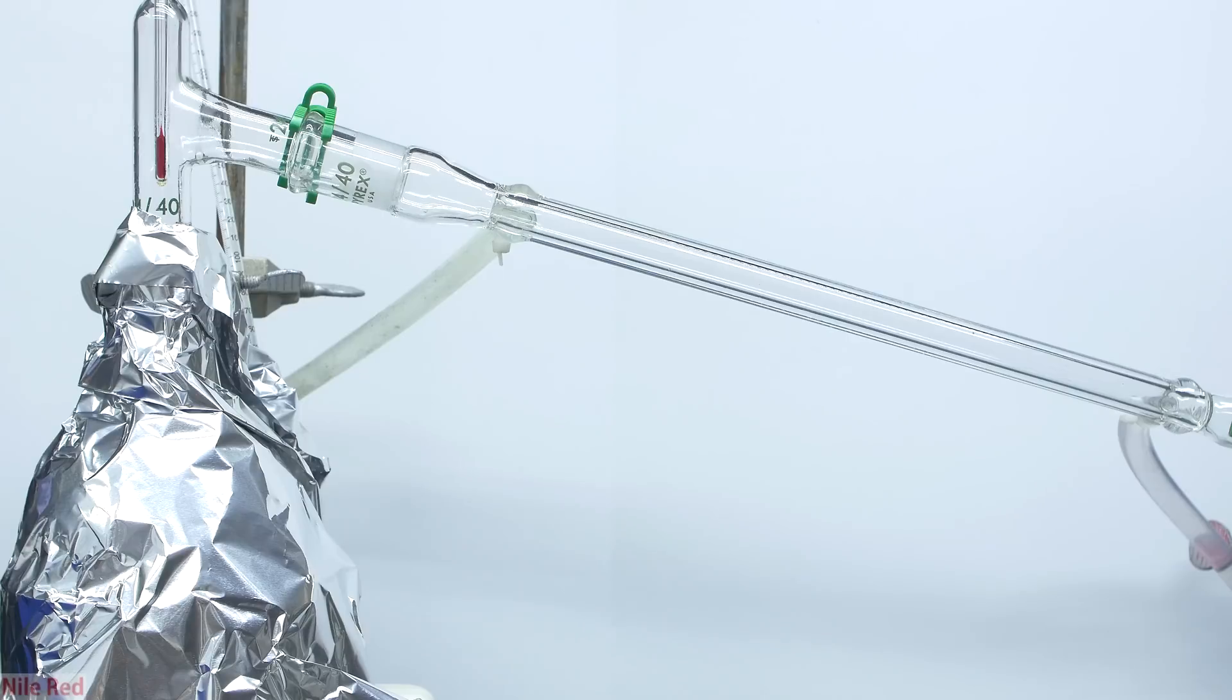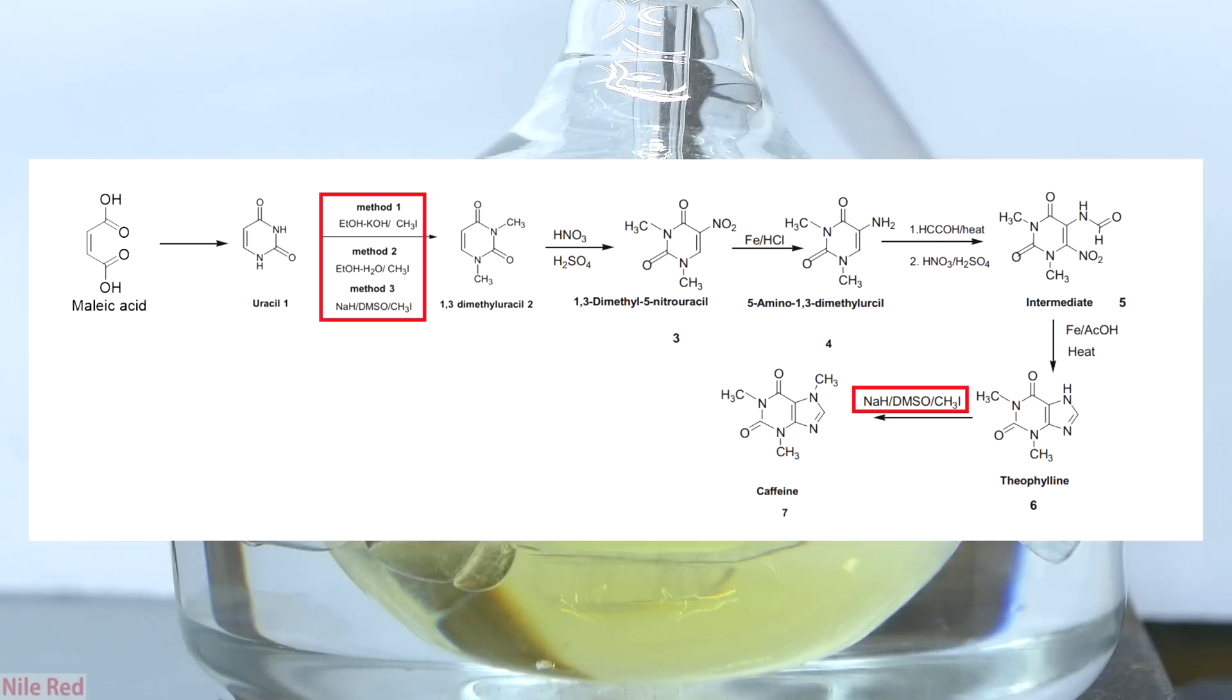I personally plan to use methyl iodide for the synthesis of caffeine starting from maleic acid. Here's the overall scheme that I plan to follow, and I've highlighted in red the step where the methyl iodide comes into play.